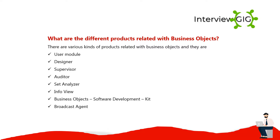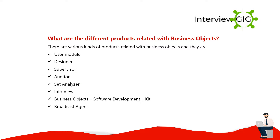What are the different products related with Business Objects? There are various kinds of products related with Business Objects, and they are: User Module, Designer, Supervisor, Auditor, Set Analyzer, Info View, Business Objects Software Development Kit, and Broadcast Agent.